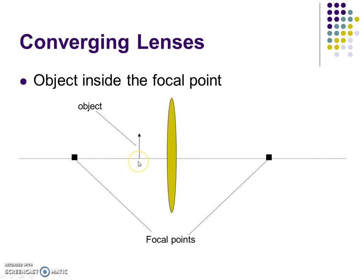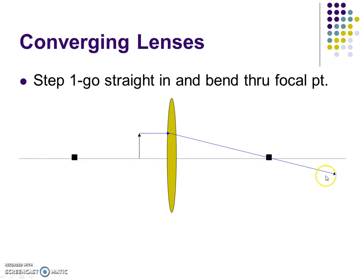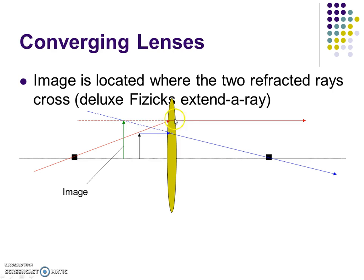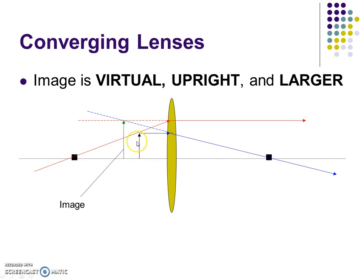Now let's put the object inside the focal point. Step one: go straight in and bend through the focal point. Step two: can't come down through this focal point, but just like we did with our mirrors, we go along that same line until we hit the lens, and it comes out straight. The image is located where the two refracted rays cross — since these guys aren't parallel, they cross back here. This image is virtual and upright — it's on the same side of the lens as the object — and in this case it's larger. This is how your magnifying glasses work: you just have to have the object inside the focal point, and then you get that upright enlarged image.